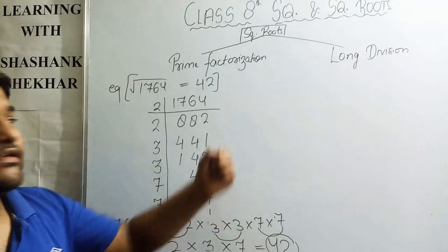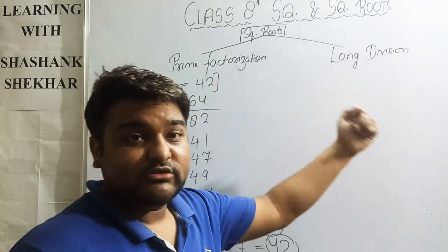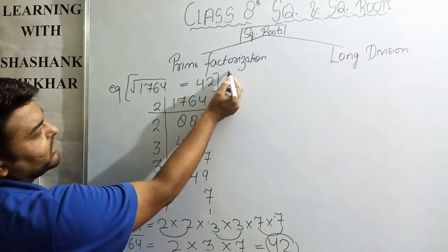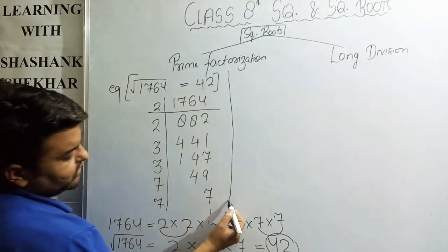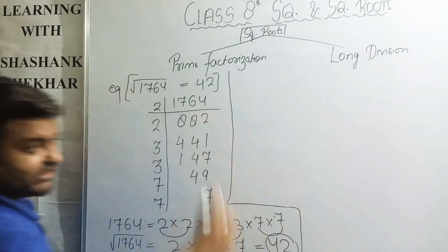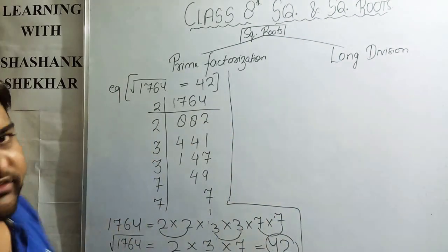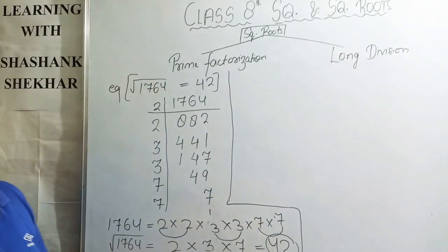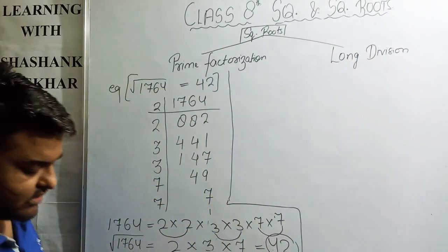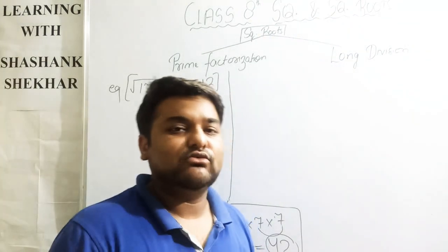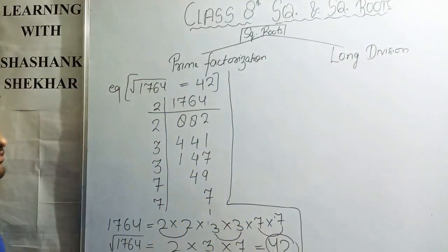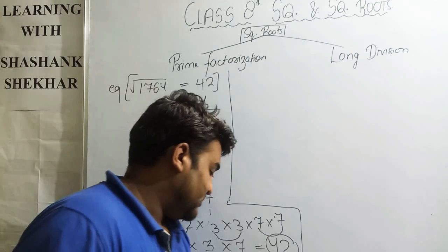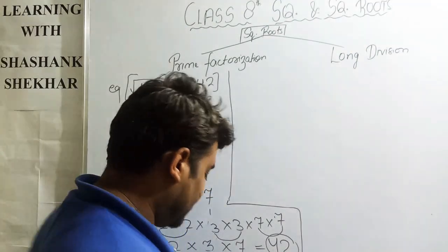Now the next method is the long division method — you must be waiting for this. In the long division method, there is also a repeated subtraction approach where we subtract odd numbers and count the number of steps it takes to reach zero. But now it is time to explain the long division method.